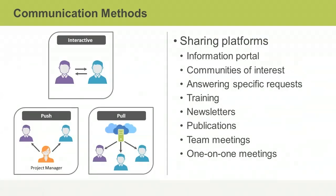Communication methods are the ways in which information is shared among project stakeholders. There are basically three classifications of communication methods: interactive, push, and pull. Interactive communication involves an exchange of information between two or more people. This multi-directional method is considered to be the most efficient way to make sure all parties achieve a common understanding. Interactive methods include meetings, telephone calls, and video conferencing.